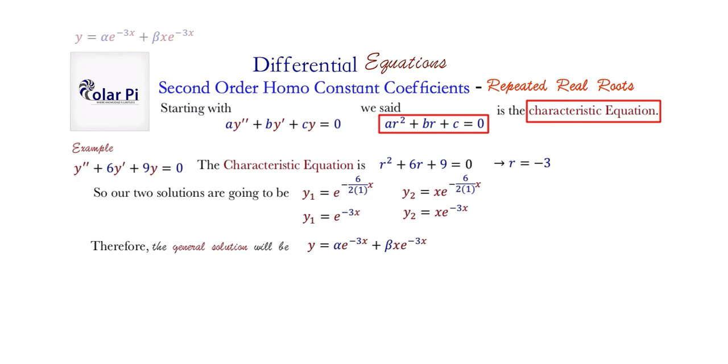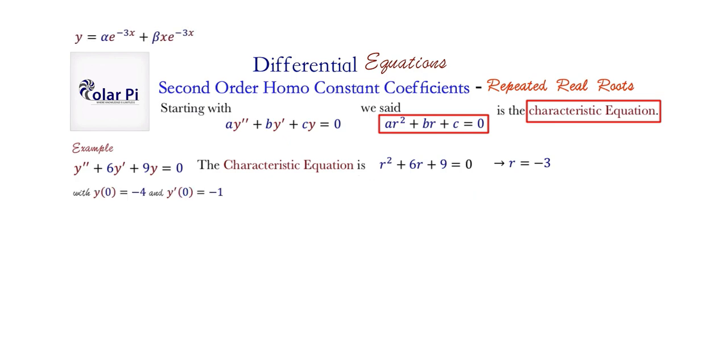To find a particular solution, we need some initial conditions. So let's impose these two initial conditions. From the first initial condition, we know that our solution y, which is this, is equal to negative 4 when x is 0. So we impose that and that means we write this first, and it simplifies to alpha being negative 4. For the second initial condition to be imposed, we need y prime. y is here. We take the derivative to get y prime, keeping in mind that in this part we need to use the product rule for derivatives because we have a product between beta x and e to the minus 3x.